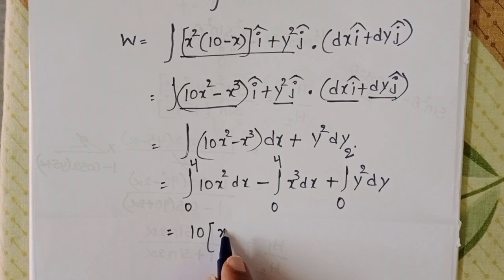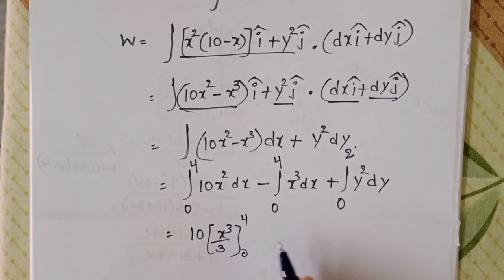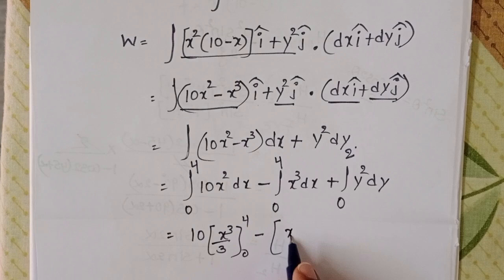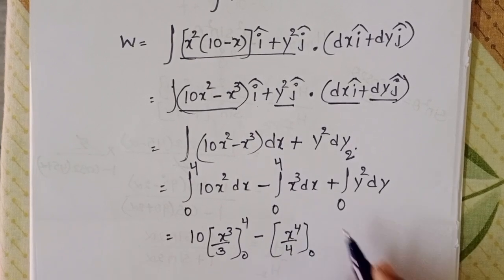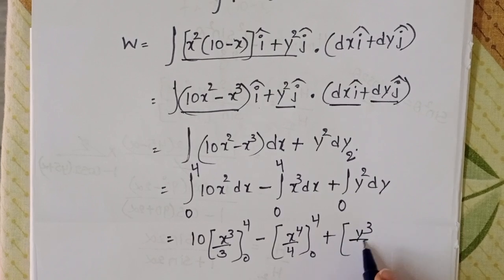Integral x² equals x³/3, minus integral x³ equals x⁴/4, integral y² equals y³/3.